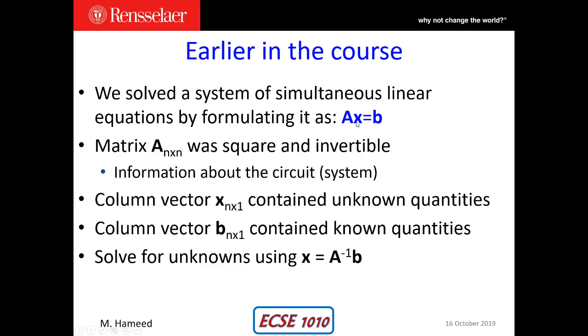The column vector X was n rows and one column, and it contained the unknown quantities which we were solving for. The column vector B, the right-hand side, was also n by 1, and it contained the known quantities. We solved for unknowns by doing X equals A inverse times B.